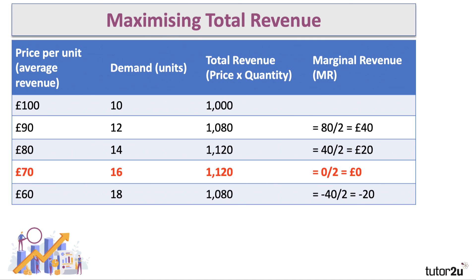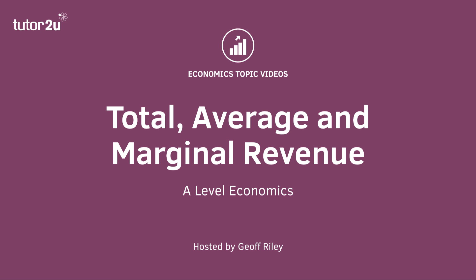So we've been through three concepts in this video: total, average, and marginal revenue, using some numerical examples. The key takeaway is that businesses looking to maximize their total revenue should set a price where the marginal revenue is zero.